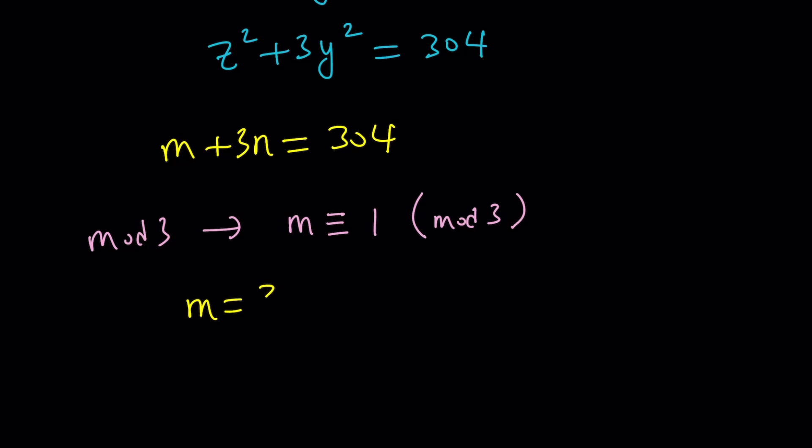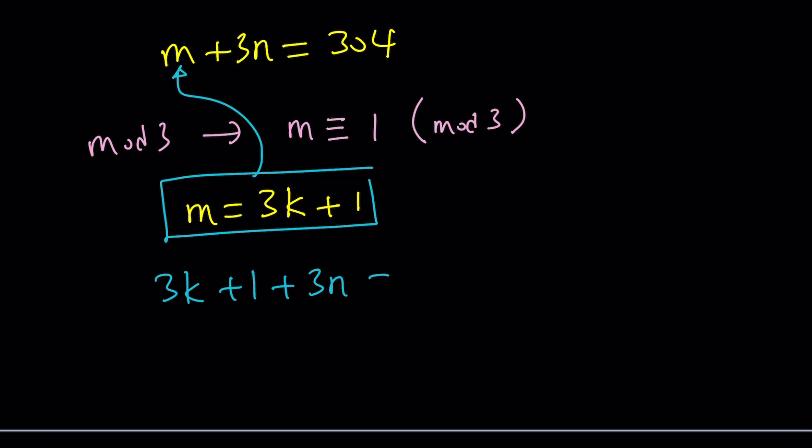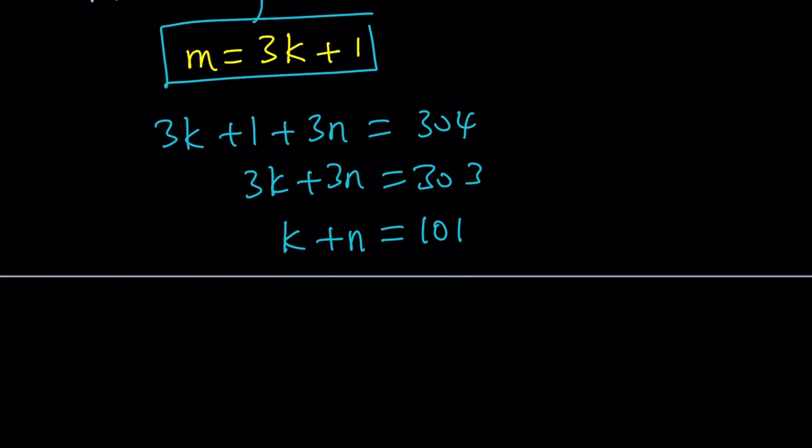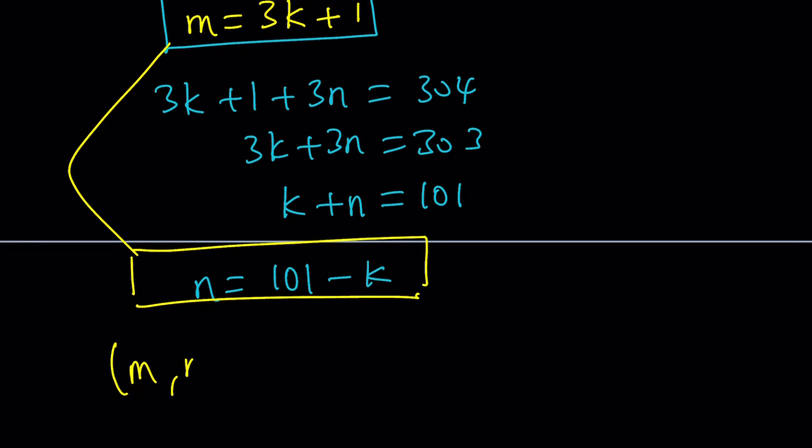And this basically means that m can be written as 3k plus 1, where k is an integer. Make sense? And now, we can go ahead and plug this into this equation and see what we can find for n. That's going to give us 3k plus 1 plus 3n equals 304. And then, 3k plus 3n is 303. This kind of makes sense because 303 is divisible by 3. So, we can go ahead and simplify this and get k plus n is 101. Awesome. Definitely, we have an expression for m. Now, we do have an expression for n. n can be written as 101 minus k. You can also write it as negative k plus 101, but I like this one better. So, now, we have these two things, right? So, we can kind of write the m, n ordered pair as 3k plus 1 comma 101 minus k, where k is an integer just like m and n and all the other variables.